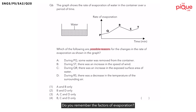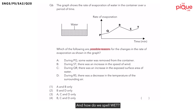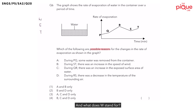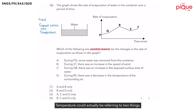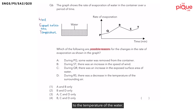Do you remember the factors of evaporation? We use the acronym WET to help us remember. W-E-T. W stands for wind, E stands for exposed surface area, and T stands for temperature. Temperature could actually be referring to two things: firstly the temperature of the surrounding, or it could also be referring to the temperature of the water.